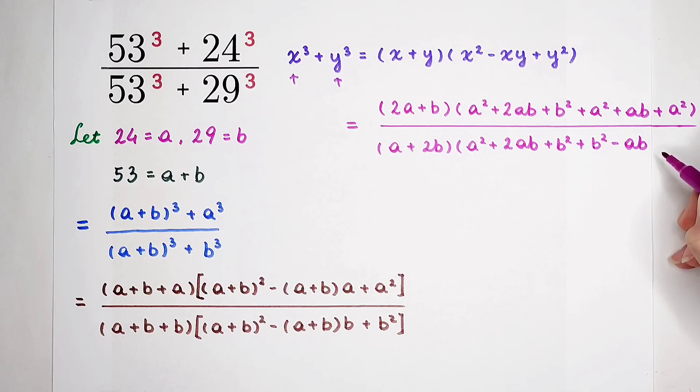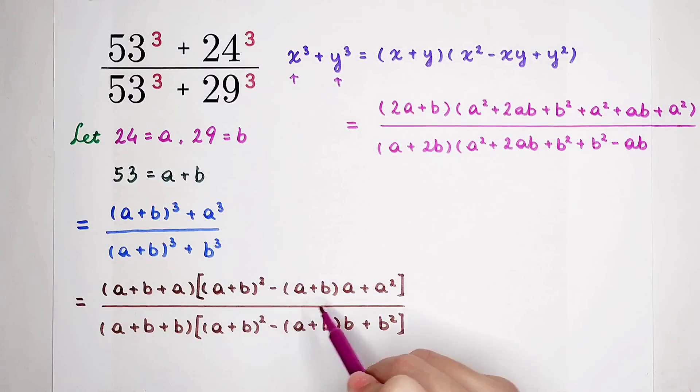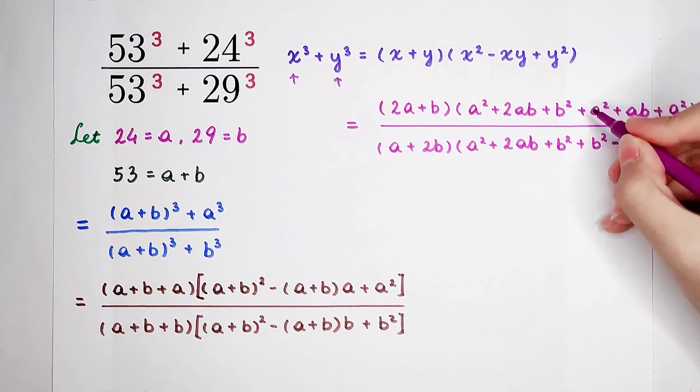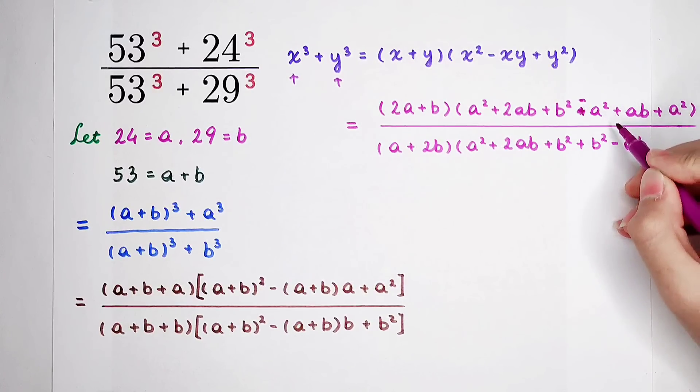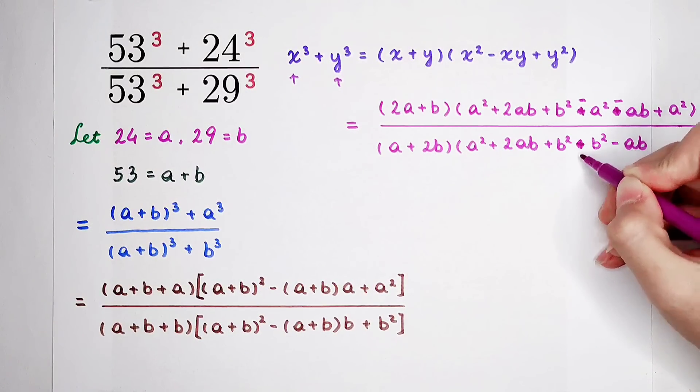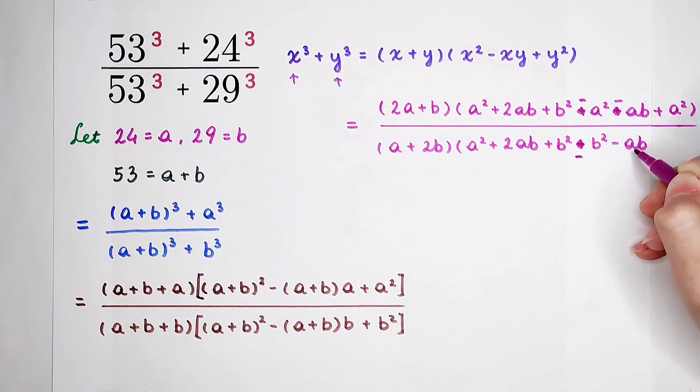So, here is a plus b squared minus ab. Sorry. Something went wrong, I think. I found out. I found out. Look here. Minus a times a. So, it is minus a squared, not plus a squared. Minus a squared. And here is minus a times b, not plus, because here is a minus. Because I thought that, here was a plus. And here as well. So, here is negative b squared. And negative ab as well.